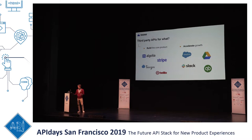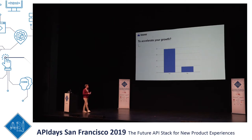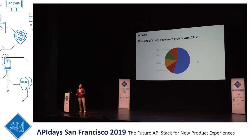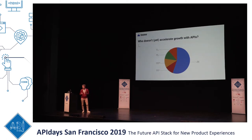Most companies start by using third-party APIs to build their core product — that's why Twilio and similar companies are so successful today. Close to 90% of respondents said they also accelerate their growth by building new features and making their product more relevant. The ones who don't are mostly seed-stage companies, which makes sense — they're still finding product-market fit and don't have the money to build and manage third-party integrations.